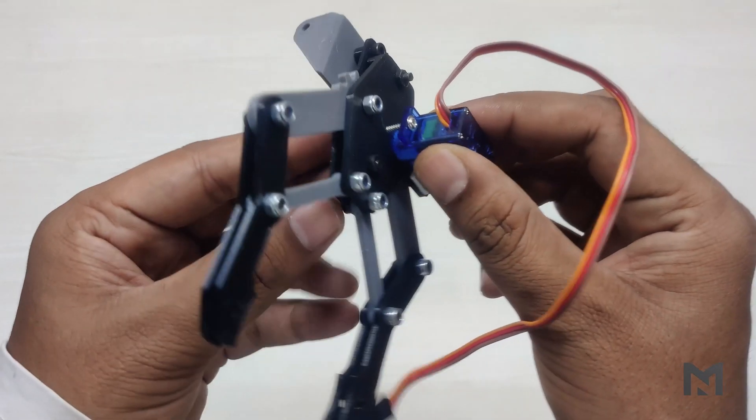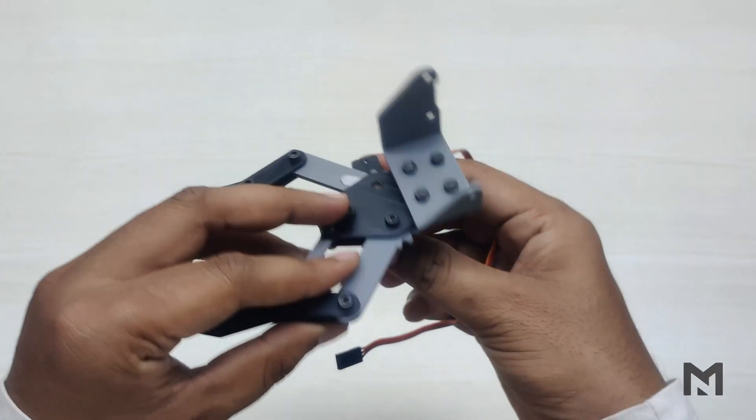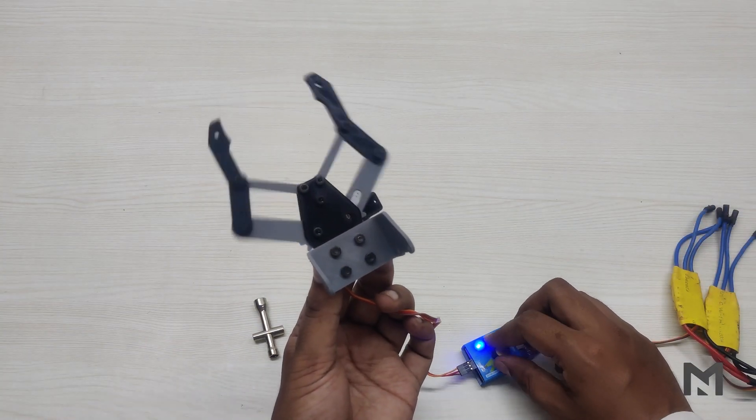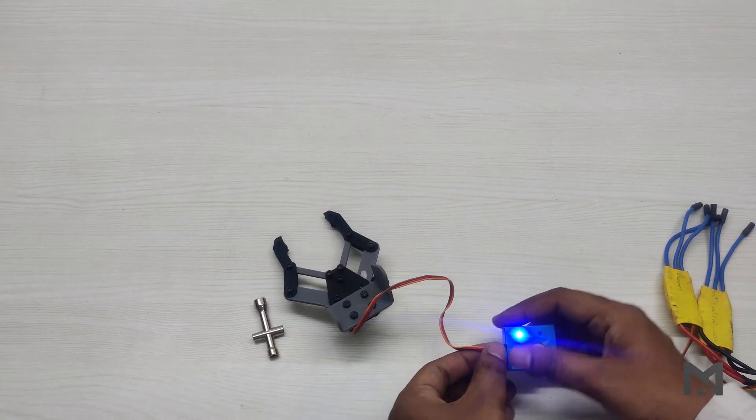I have fixed the servo using two long screws of 2mm diameter. Then test the claw with a servo tester. If its grabbing power is not enough according to you, then you can replace the servo with a metal one.